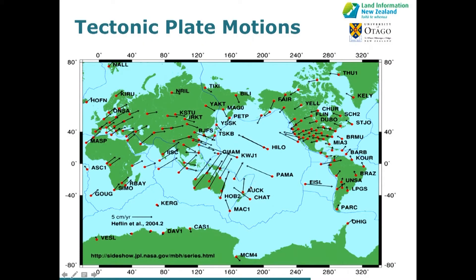Focusing on the New Zealand region, this is the plate boundary between the Pacific and the Australian plate. New Zealand is on a plate boundary, which tells us we've got a somewhat different problem than Australia. The two velocity trends I want you to take away are Chatham and Auckland. The Chatham velocity represents the Pacific plate velocity in our region, trending north-west. The Auckland velocity represents approximately the Australian plate velocity, trending generally north.